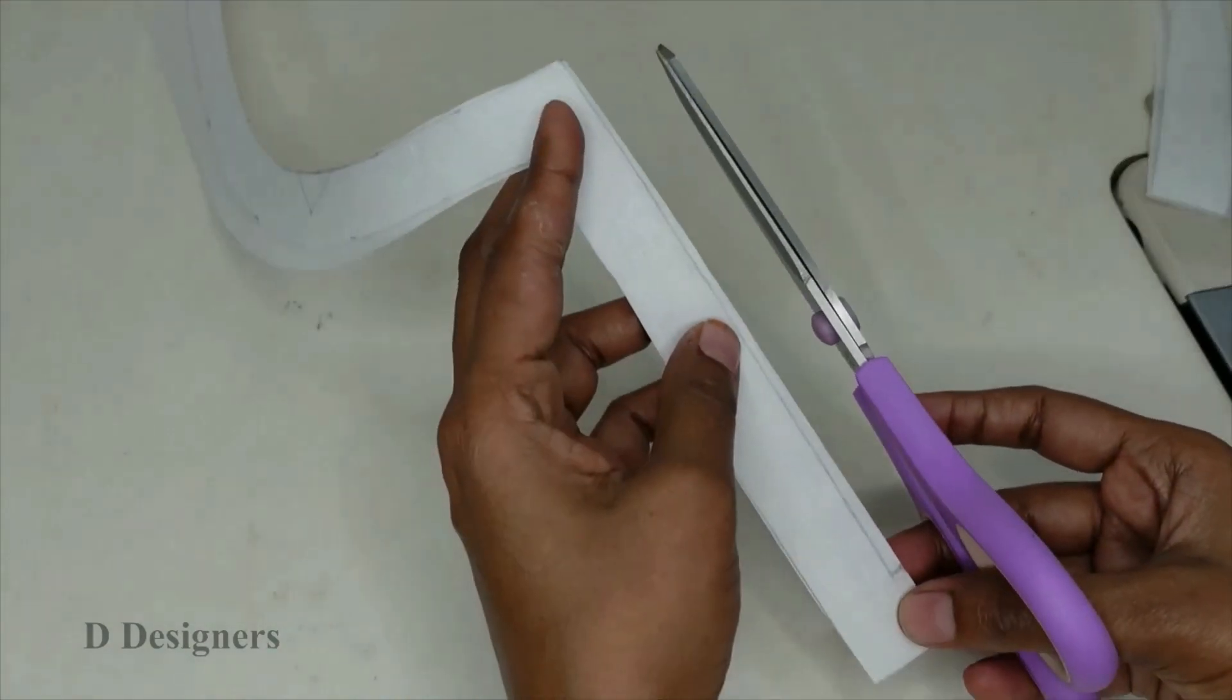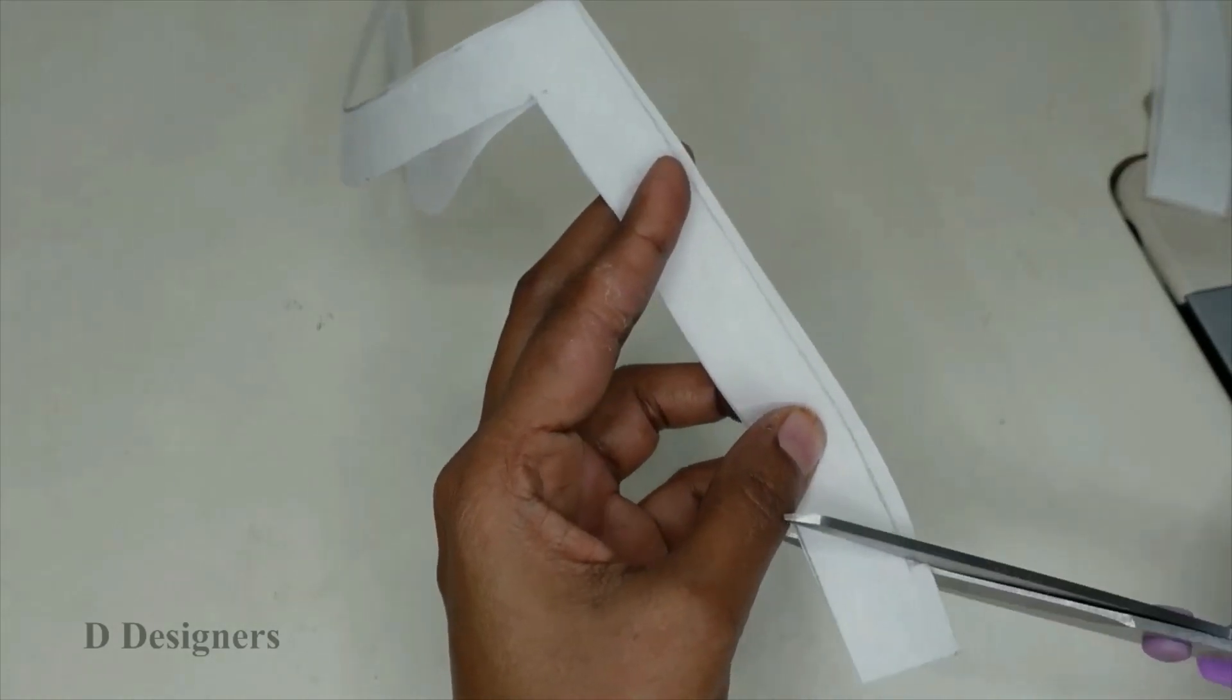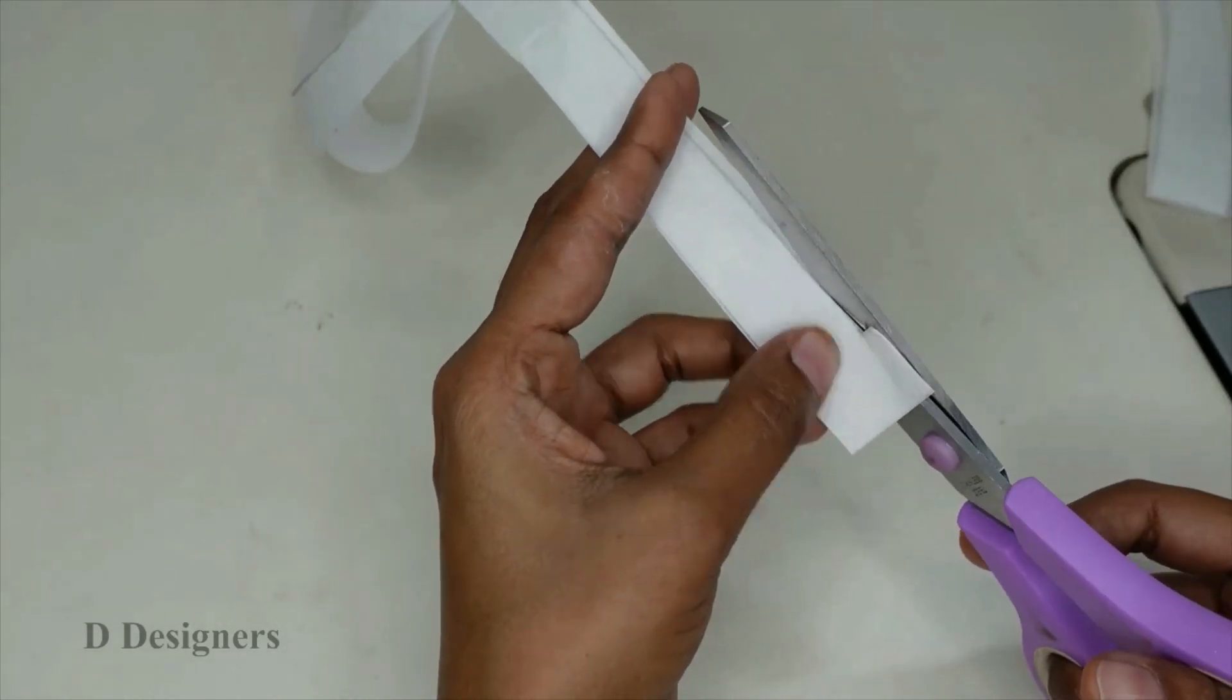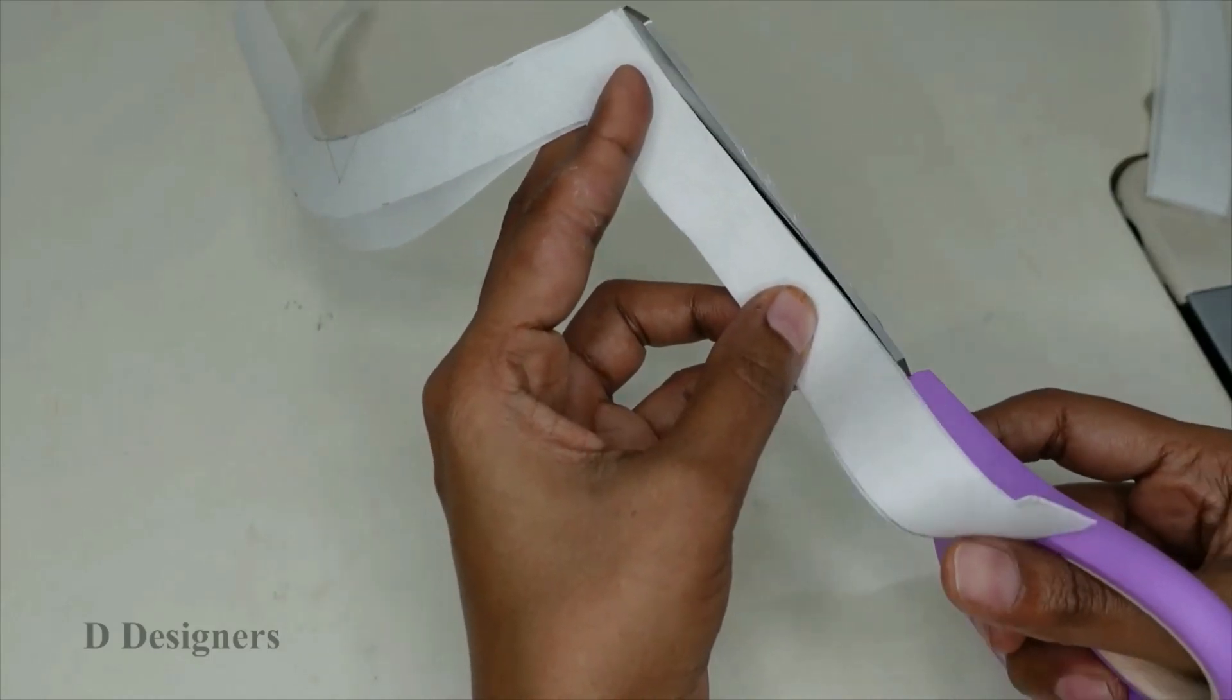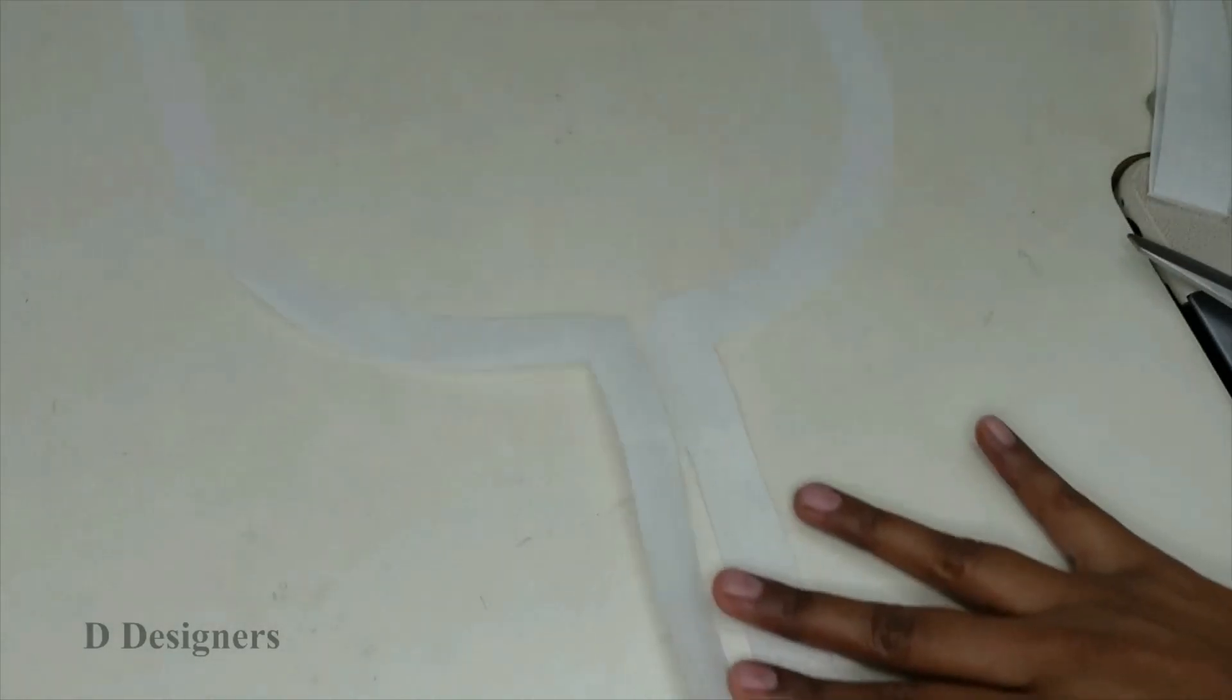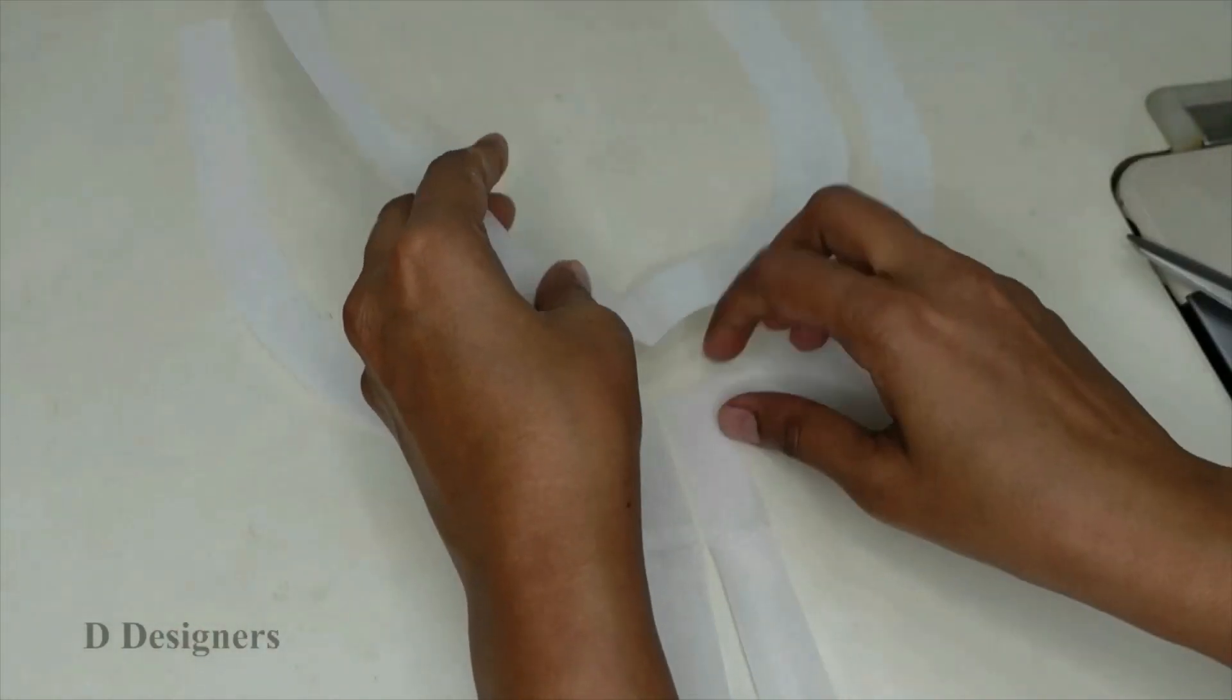Now I am going to cut the placket. Do it carefully when you cut this line. Now you could see the shape of the neck. This is the second one and now it is the first neckline.